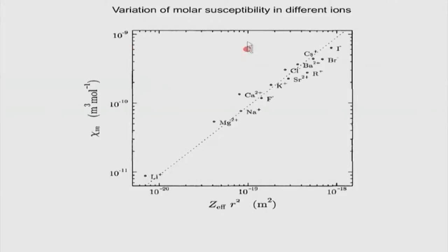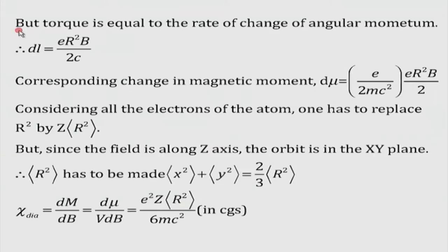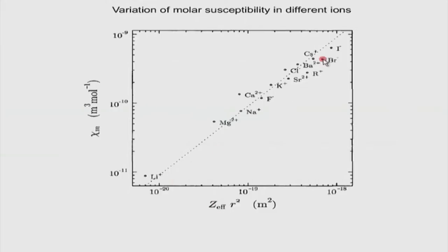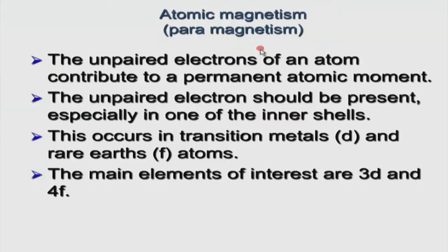Diamagnetic susceptibilities are very small for usual materials — in SI units the values are of order 10⁻¹¹ to 10⁻¹⁰, very very small compared to 1. The expression contains Z × ⟨r²⟩, so when plotted as a function of Z × ⟨r²⟩, larger values give larger diamagnetic susceptibility. This is an experimental verification of the relationship derived both quantum mechanically and using pure classical electromagnetism.